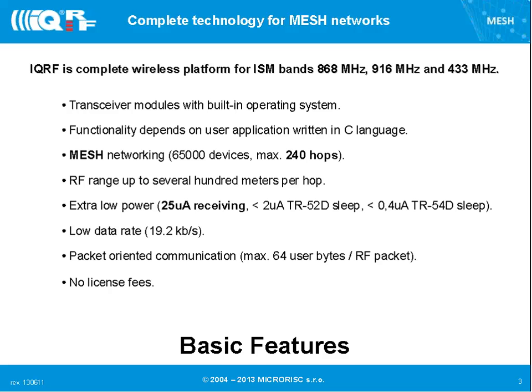Usually in a private home you can cover the whole house in direct range, and then you can use hopping as well. Extra low power is one of the key features. You can use battery-operated devices. In special extra low power mode receiving all the time, it can consume less than 25 microamps — definitely among the top on the market. For some modules in sleep mode, you are even under 400 nanoamps. Even with the watchdog running, it is still about one microamp.